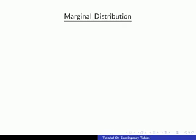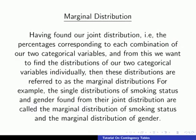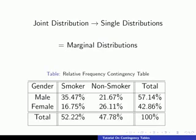Now that we have our joint distribution, we could be asked to find the marginal distributions. If we have found the joint distribution of our categorical variables and we're asked to find the individual distributions of each variable, then these are called the marginal distributions. From our example, we've found the joint distribution of gender and smoking status, and now we want the individual distributions of each. A way of remembering: if we're going from the joint distribution to the single distributions of our variables, we're looking for the marginal distribution. To find them, we go back to our relative frequency contingency table — the marginal distributions are found in the outer margins, which is another good way of remembering how to find them.